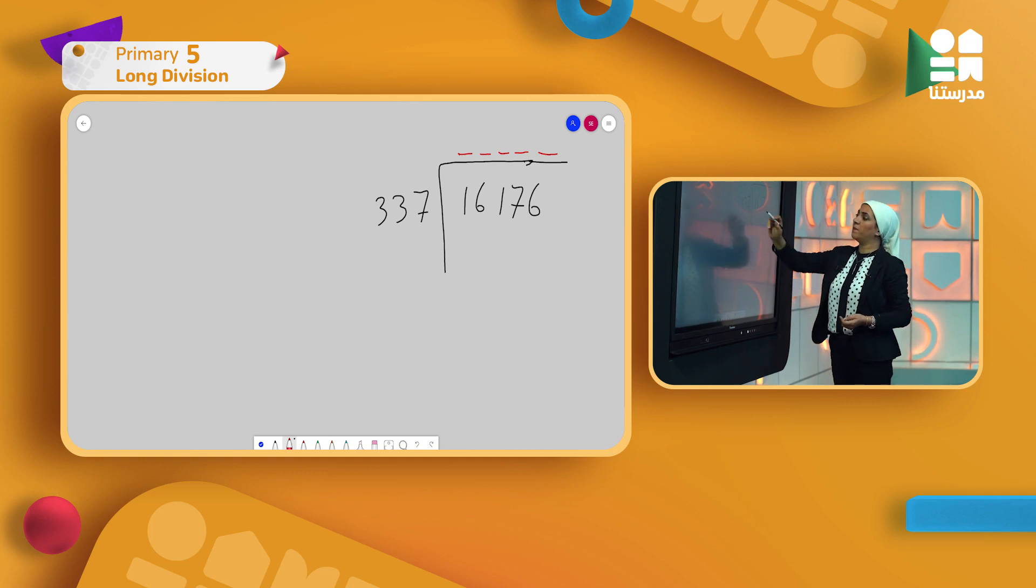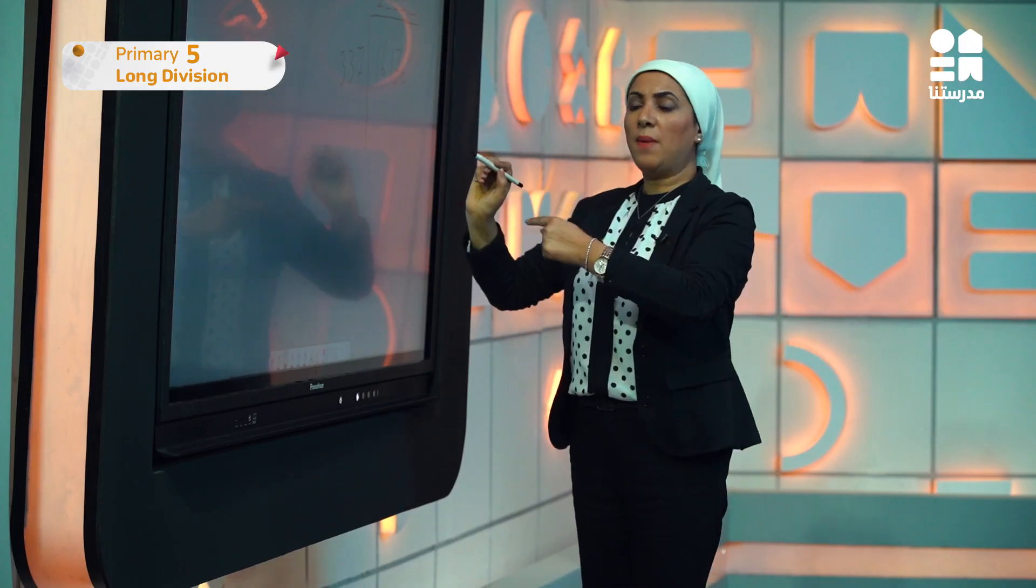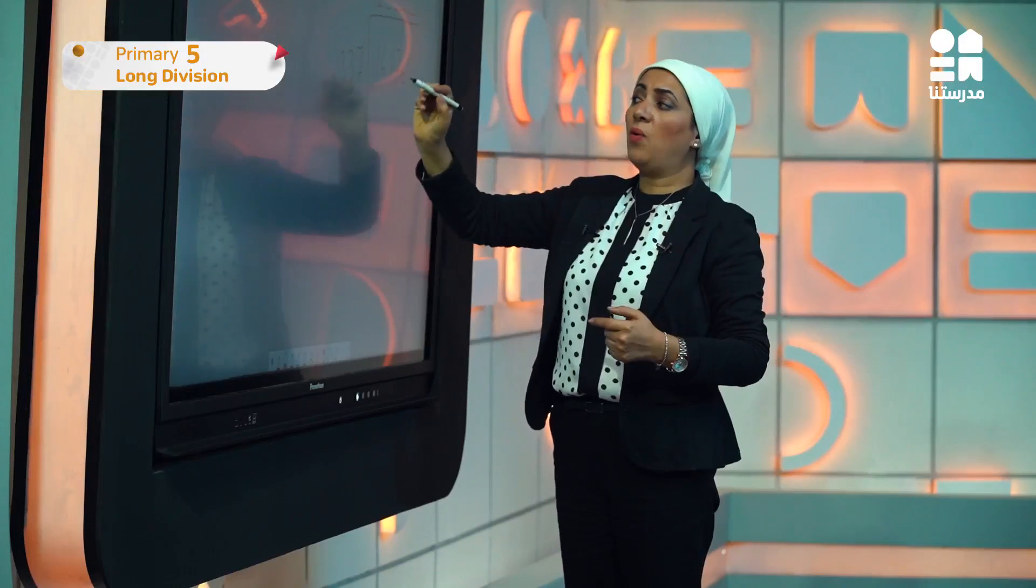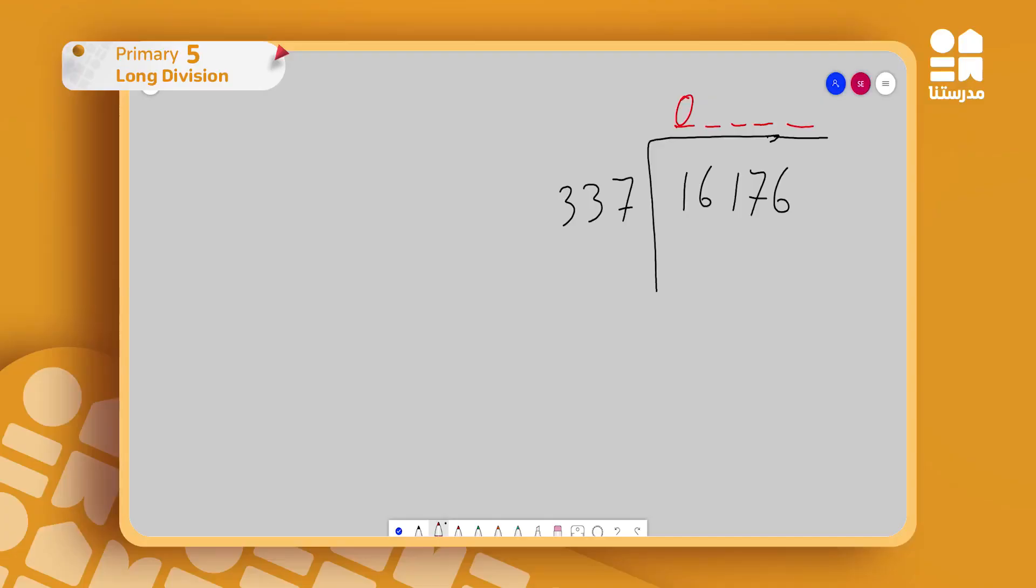I'll start first with the dad. I want to divide, so here I have 337. Let's check the first digit. Is 1 equal to or greater than 337? No, so I put zero. Then I'll take 16. Is 16 equal to or greater than 337? No, again I'll put zero. I'll take 161. 161 divided by 337, is it equal or greater? No, put zero again.